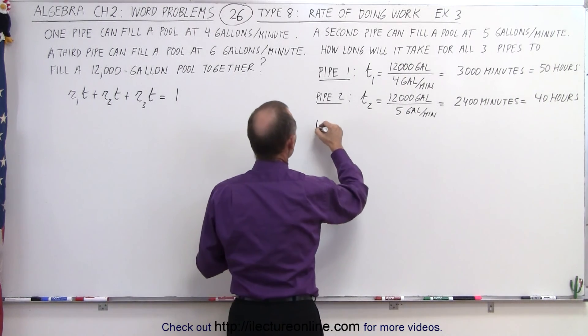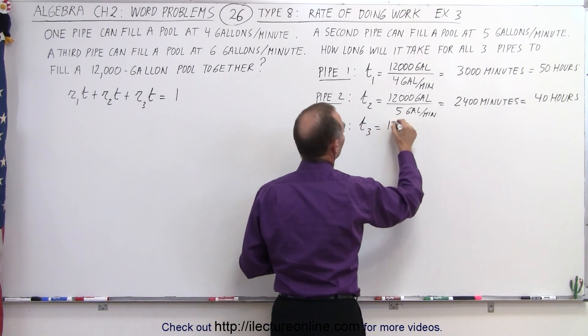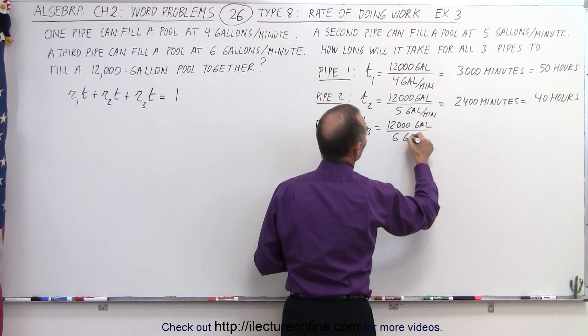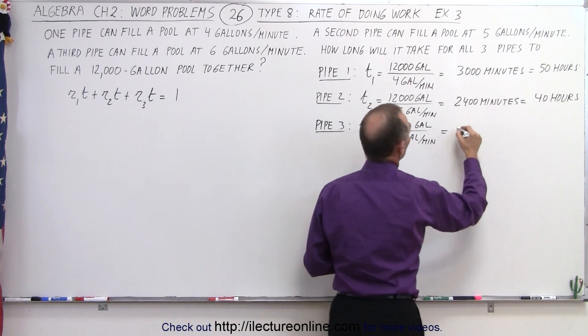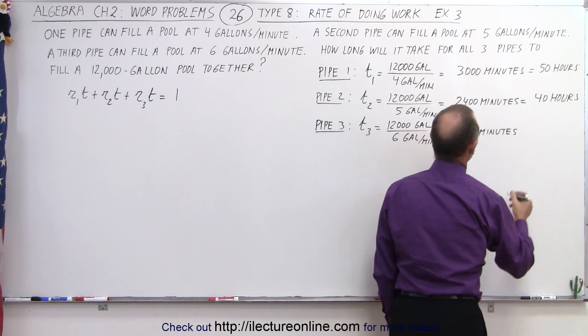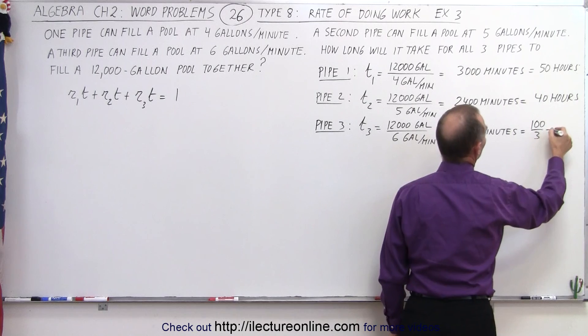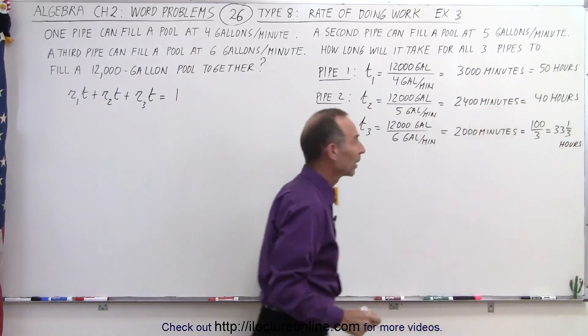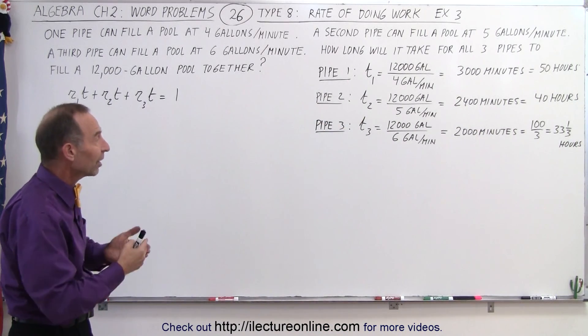And finally with pipe 3, T3 would be equal to 12,000 gallons divided by 6 gallons per minute, which is equal to 2,000 minutes. That would be equal to 100 divided by 3, which is 33 and a third hours. So now we have the time that it takes for each of the three pipes to fill the whole pool by themselves.